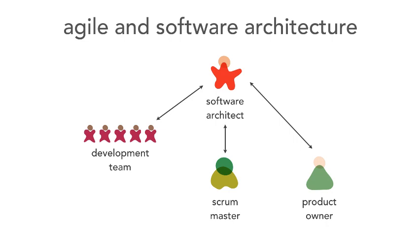The scrum master obviously also has to work with the software architect — to coordinate story grooming and some of the day-to-day issues that happen with the development team. The scrum master has to also communicate and collaborate with the development team and also with the product owner. Once we add that software architect, we have five lines of communication and collaboration needed. In most cases, things are going to be misinterpreted, information or communication is going to be lost — it's almost like playing telephone.